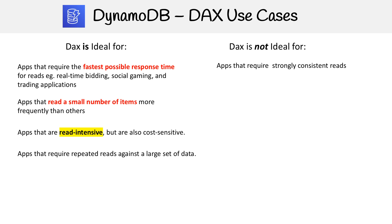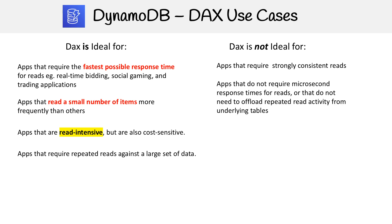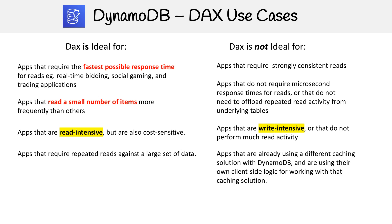On the not-ideal side: apps that require strongly consistent reads, because DAX is eventually consistent, not strongly consistent. Also not ideal for apps that do not require microsecond response time for reads, or do not need to offload repeated read activity from underlying tables. Apps that are write-intensive are not a good fit — DAX is for reads, not writes. Finally, apps already using a different caching solution with their own client-side logic would not benefit from DAX.